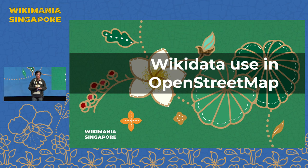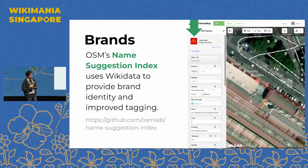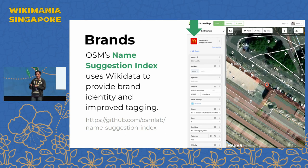We also use a lot of Wikimedia and Wikidata data in OpenStreetMap. For brands, Dennis mentioned the name suggestion index — the idea is to be consistent in how we tag branches of shops and stores in OpenStreetMap. So if you want to tag a fast food restaurant with a particular brand, we use the name suggestion index service, which is powered by Wikidata to provide consistent tagging. For example, when you select McDonald's in OpenStreetMap, it is automatically tagged with the corresponding Wikidata item for McDonald's.